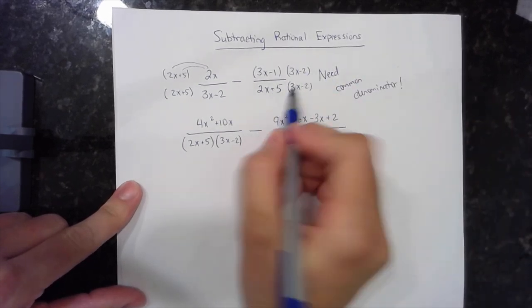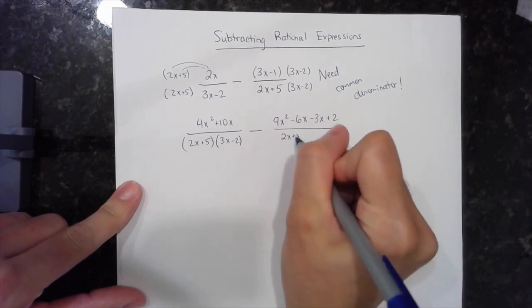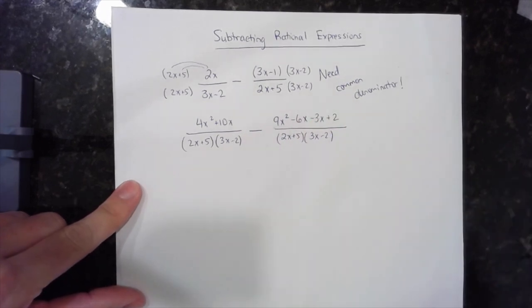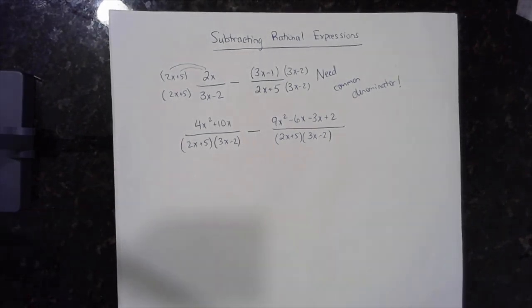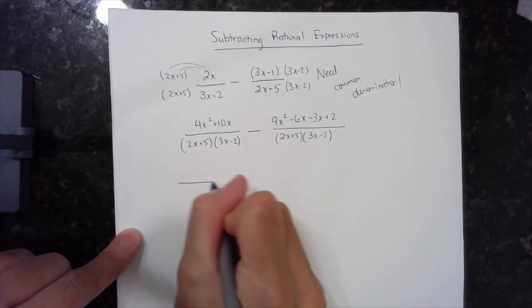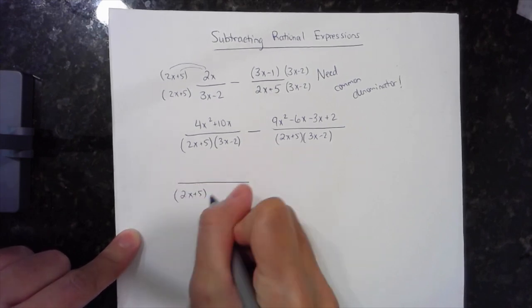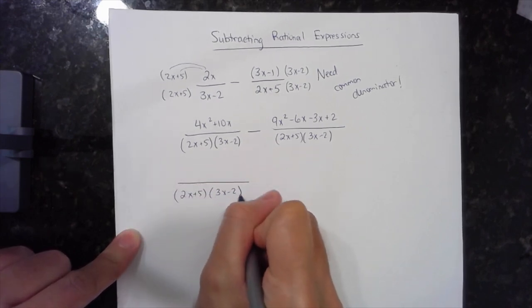All over now the same thing, this 2x plus 5 times this 3x minus 2. And now I have the same denominator, which means I could work the top and keep the bottom. So the bottom is going to stay as the product of these two expressions.